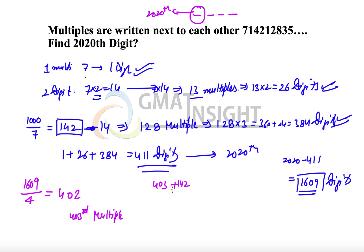So the total multiples of 7 that we need to consider should be equal to 403 and 142 I am adding, so that becomes 545.